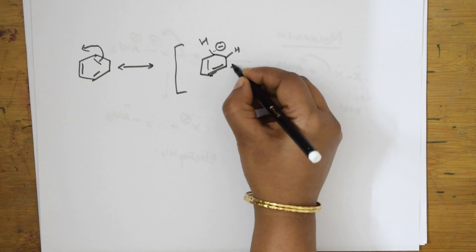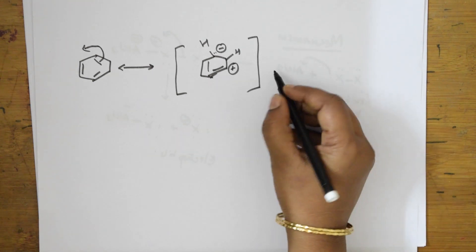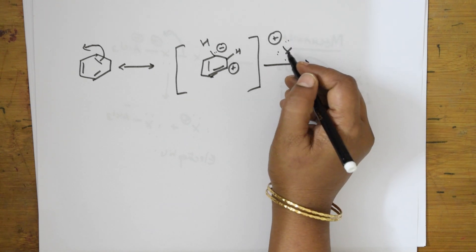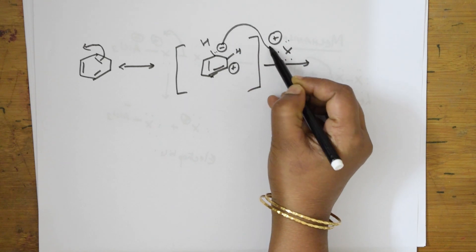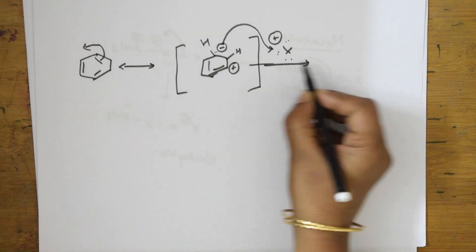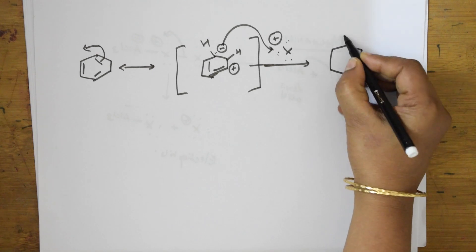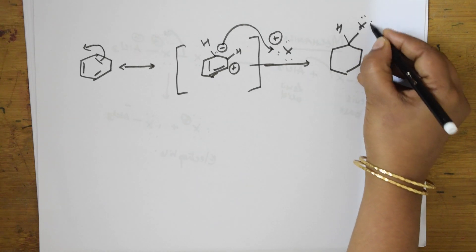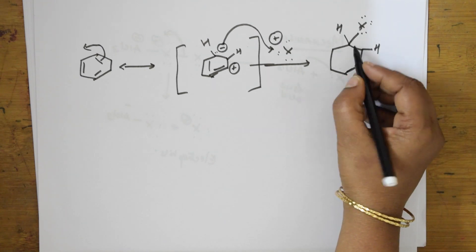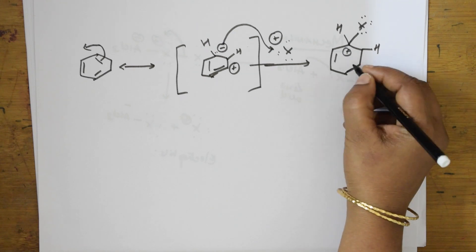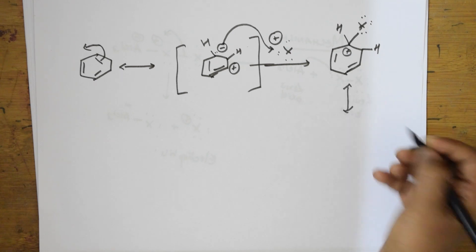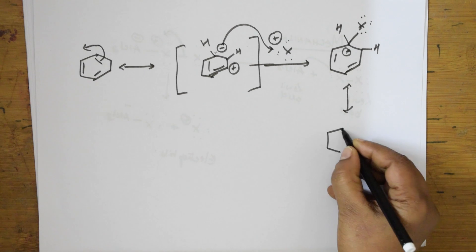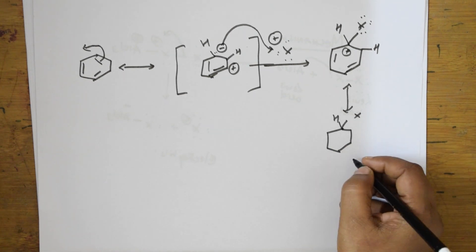After X+ attacks benzene, I get a sigma complex (arenium ion): X is now bonded to one carbon of the ring, that carbon is sp3, and there is a positive charge on the ring. The ring now shows resonance — the positive charge shifts around the ring through successive pi bond migrations. This positive charge is delocalized across the ortho and para positions of the ring.